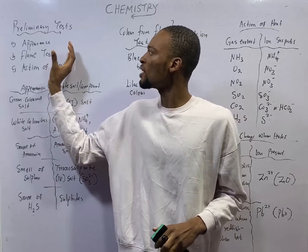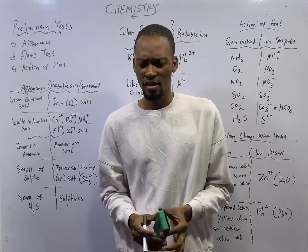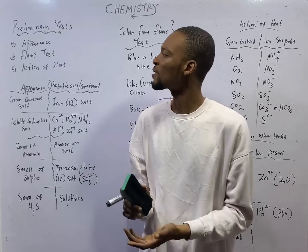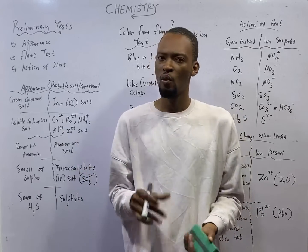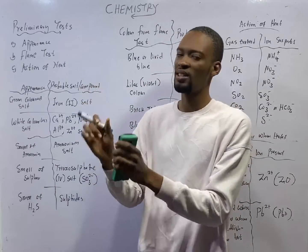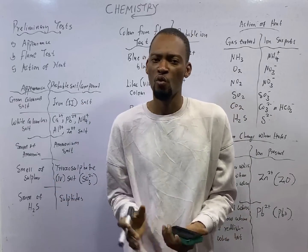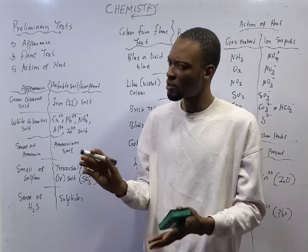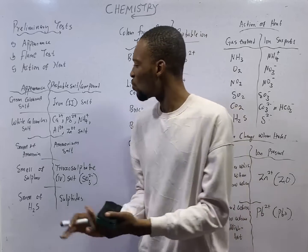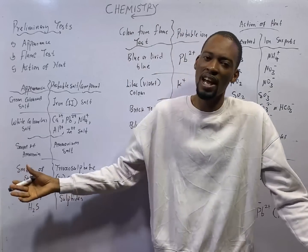Now, when it comes to preliminary test, we have different types of tests. Appearance test: based on how something appears, you can tell the compound or the ion present. The flame test: when this substance or compound burns, what color of flame does it produce? Then action of heat: when you heat this substance, what does it turn to? What color does it produce? What happens when heated? We shall look at all these as you can see from the board.